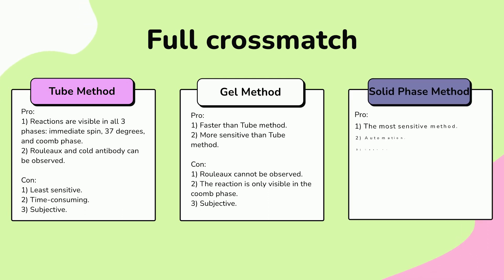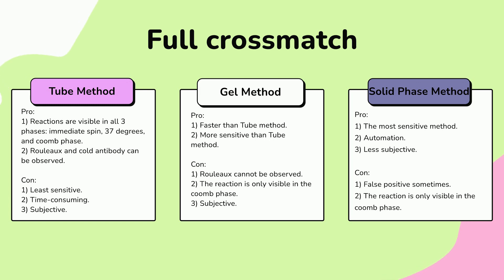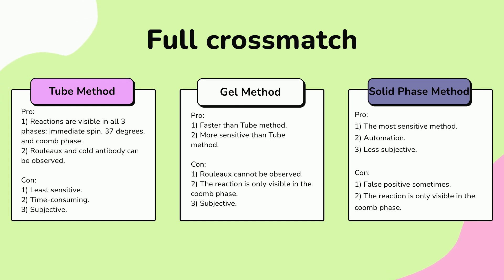Solid phase crossmatch — pros: the most sensitive method for full crossmatch, automated, less subjective. Cons: because it is highly sensitive, false positives are sometimes identified, and you only see results in the Coombs phase. Once you finish gel or solid phase crossmatch, you will also have to perform an immediate spin crossmatch for patients with antibodies or a history of antibodies.